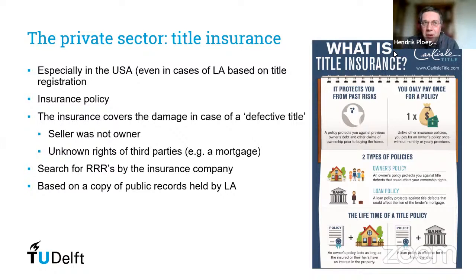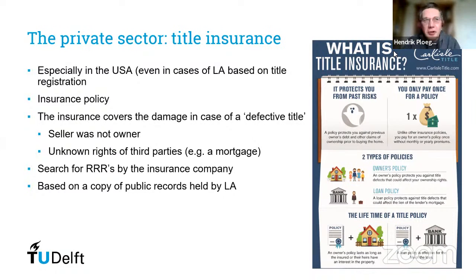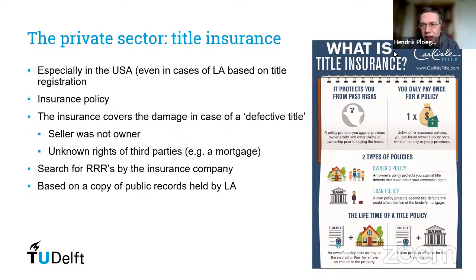In the US they found a solution — not offered by the government but by the private sector. I will talk about it more in depth in lectures five and six. It's called title insurance, so it is just an insurance company. What they do is like insuring your house against fire or burglary — they offer an insurance for you as an owner. If something is wrong with your title — you purchased from someone who pretended to be the owner and later the real owner comes — they will pay for the damages, not only for you but also for the mortgage bank.